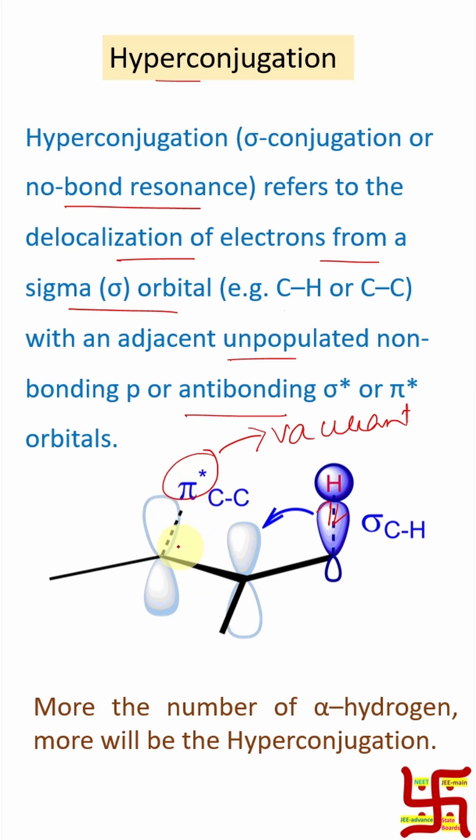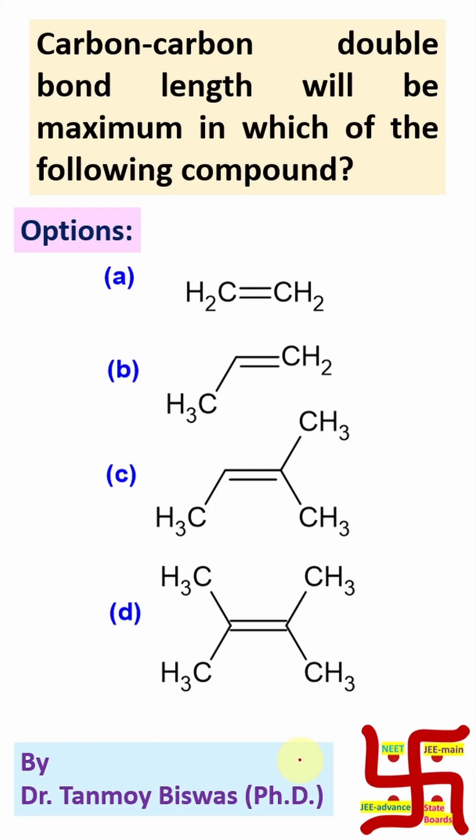Now, here the double bond character will be reduced and single bond character will increase upon hyperconjugation. Now, a concept that more the number of hyperconjugation, more will be the single bond character. And this carbon is called alpha carbon. So, more the number of alpha hydrogen present, more will be the hyperconjugation. So, this is the basic understanding.